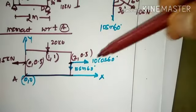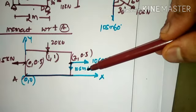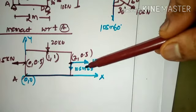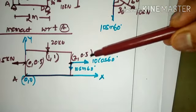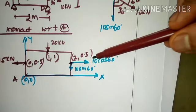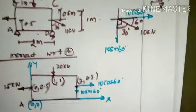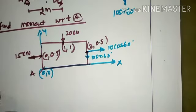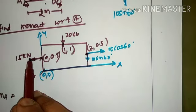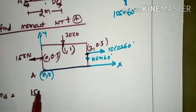So we have two resolved force components: 10 sin 60 and 10 cos 60. For 10 sin 60, which is a y-component force, we multiply the x-coordinate, which is 2. For 10 cos 60, which is an x-component force, we multiply the y-coordinate, which is 0.5. Writing moment with respect to A: the 15 kN x-component force is multiplied by y-coordinate 0.5, giving 15 × 0.5.